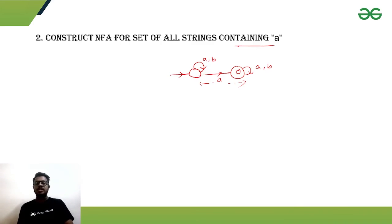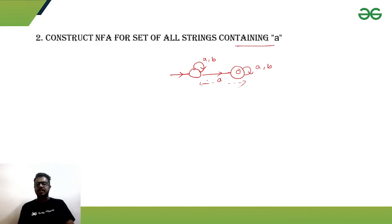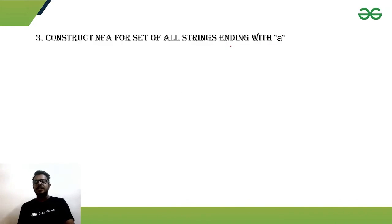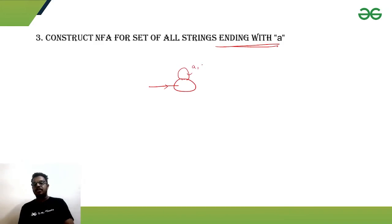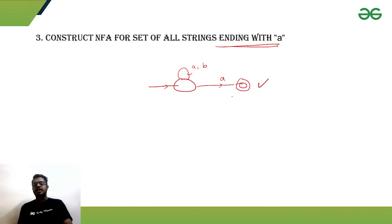For DFA we need to explicitly mention for every state and every input what the exact output state is, but here two options are possible — either stay in the same state or go to the final state — which would not be the case for DFA. Drawing an NFA is comparatively much easier than a DFA. Similarly, for strings ending with symbol 'a': initially 'a' or 'b' can come, but if we end with symbol 'a', we reach the final state. That's the NFA construction for the given languages.